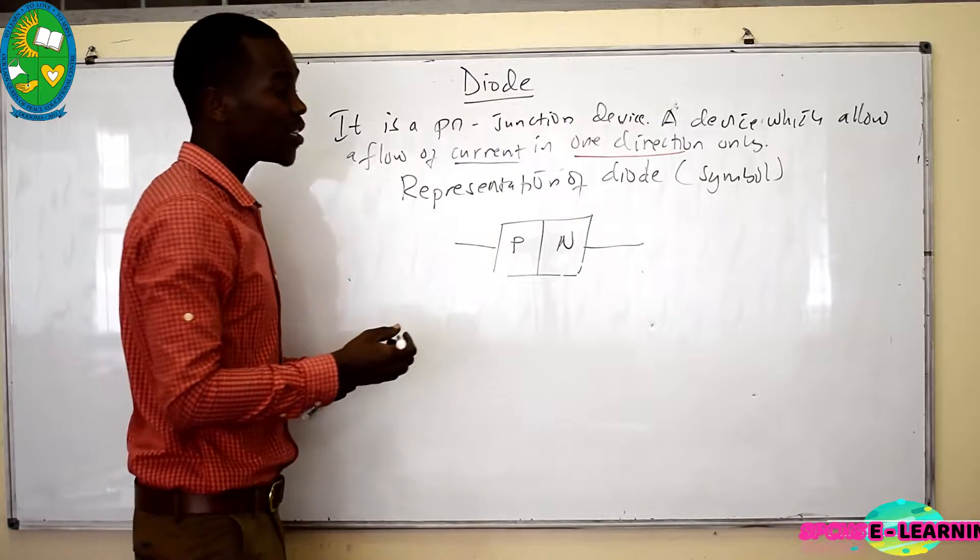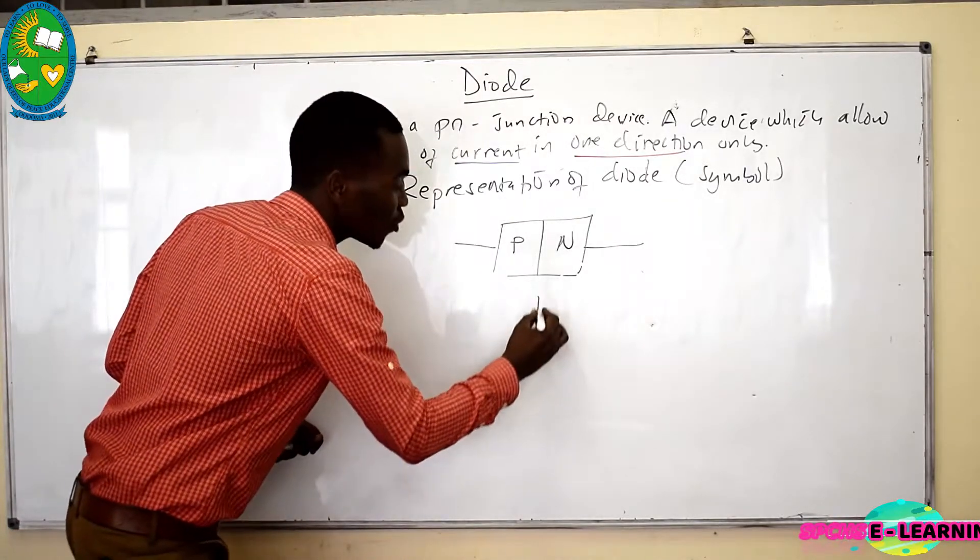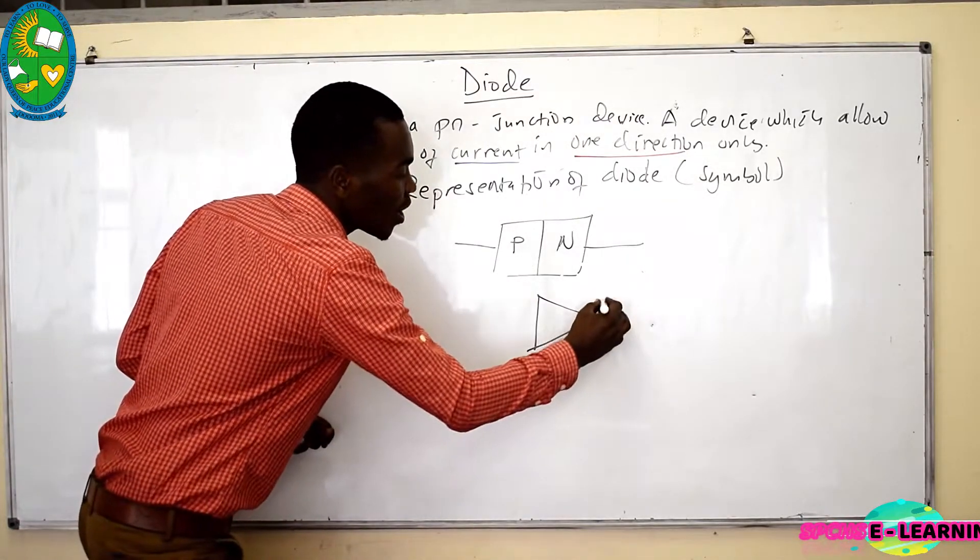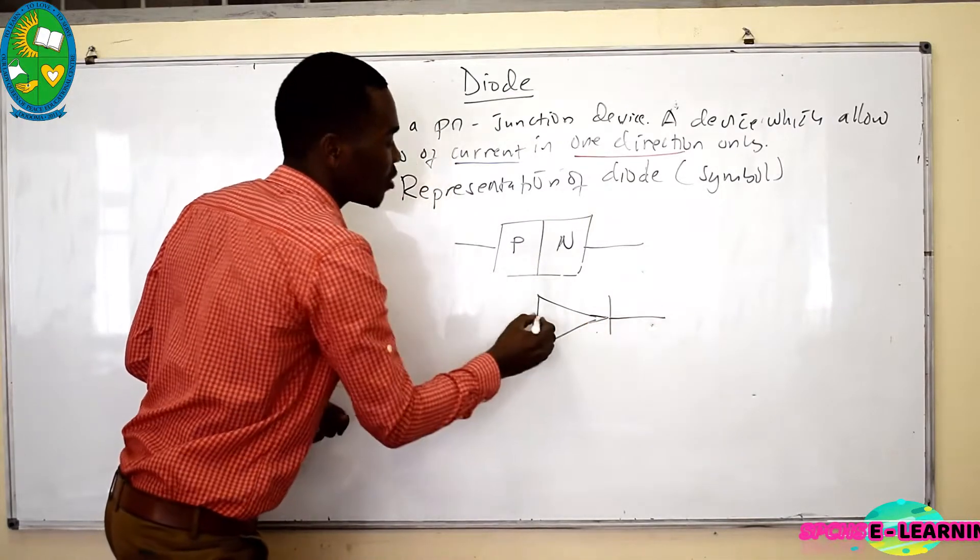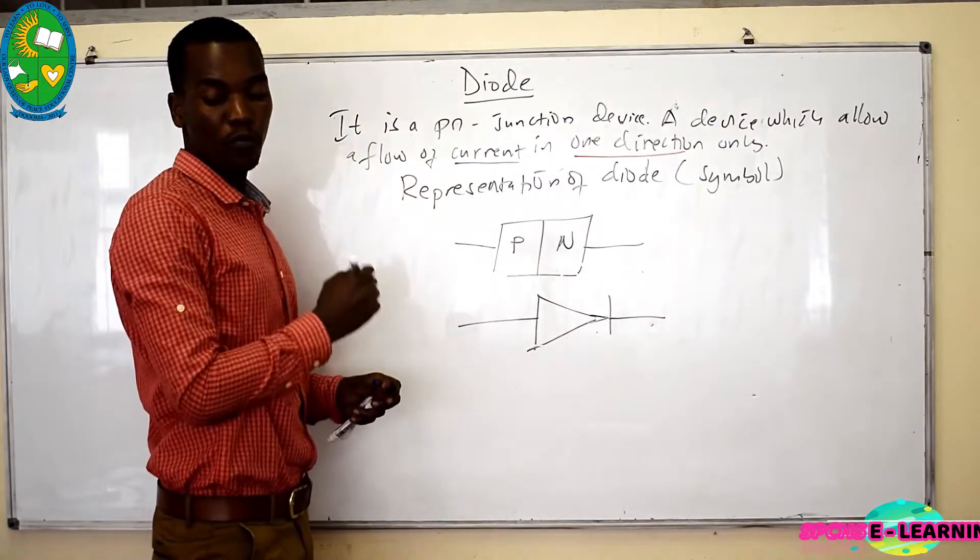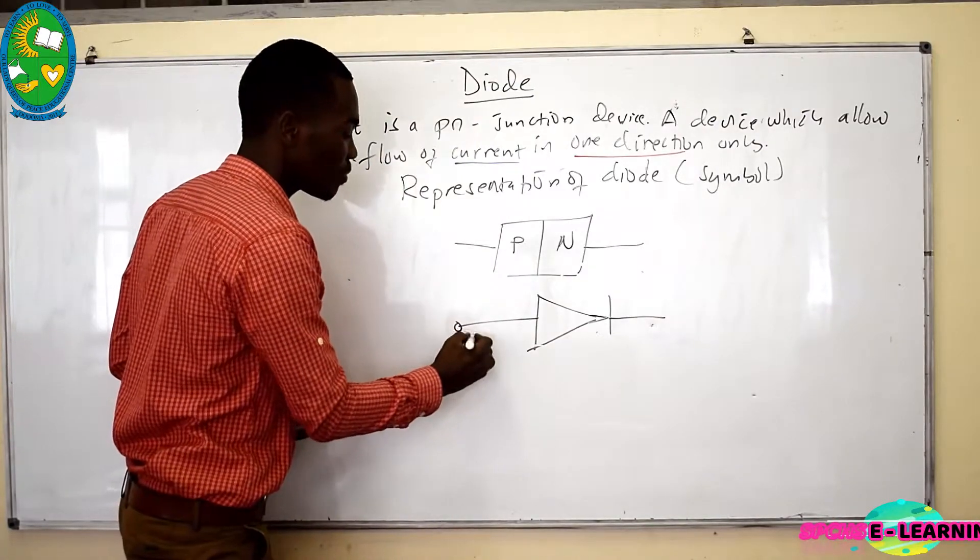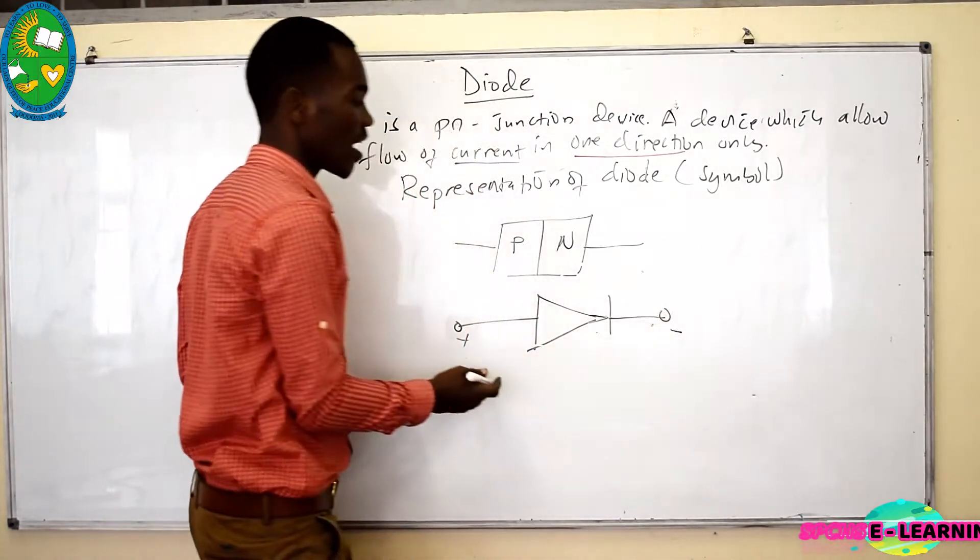But also, a diode is presented by a special circuit diagram which is drawn like this. A special circuit diagram which is drawn like this one. From this one, this means that this is a positive side and this one is the negative side.